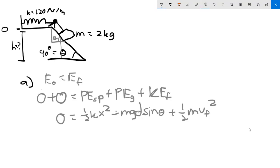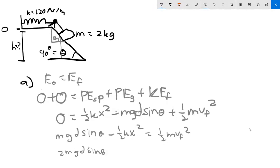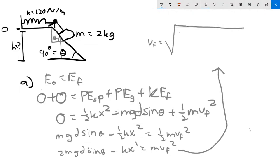We add the kinetic energy one-half m v squared. To find v, we rearrange: add mg·d·sin θ to the left side, subtract one-half k x squared, giving one-half m v_final squared. Multiply by two: 2mg·d·sin θ minus k x squared equals m·v_final squared. Divide both sides by m and take the square root. v_final equals the square root of (2mg·d·sin θ minus k x squared) all over m.